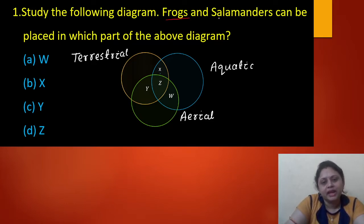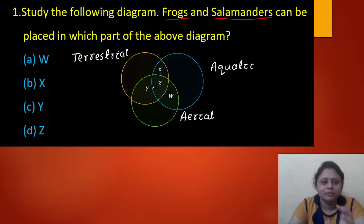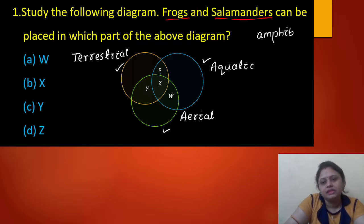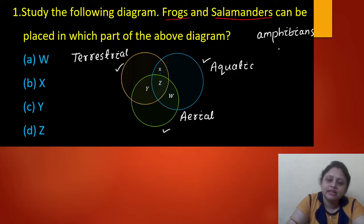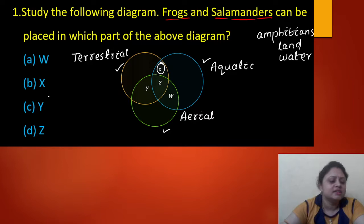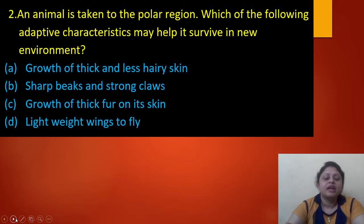Our first question: study the following diagram — frogs and salamanders can be placed in which part of the above diagram? This circle is for terrestrial animals, this is for aquatic, and this is for alien. We know that frogs and salamanders are amphibians — they live both on land and in water. So they can be called terrestrial and aquatic, meaning they fall in the overlap region X. The correct answer is option B, X.